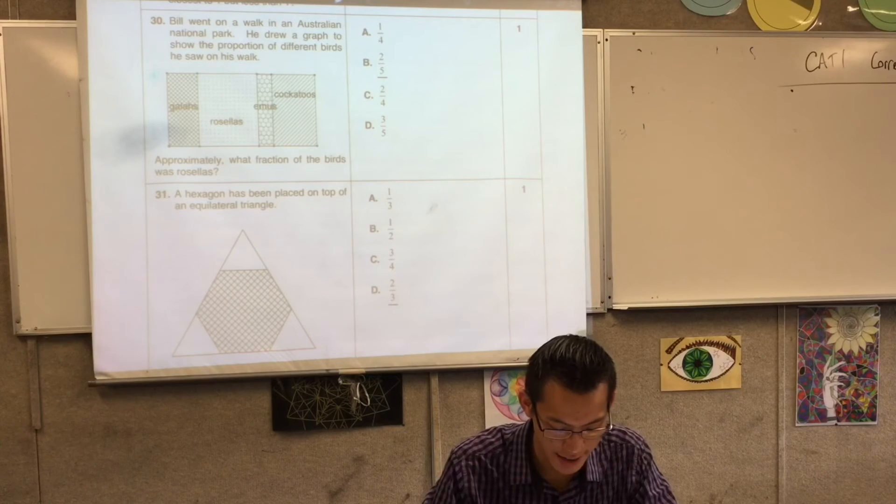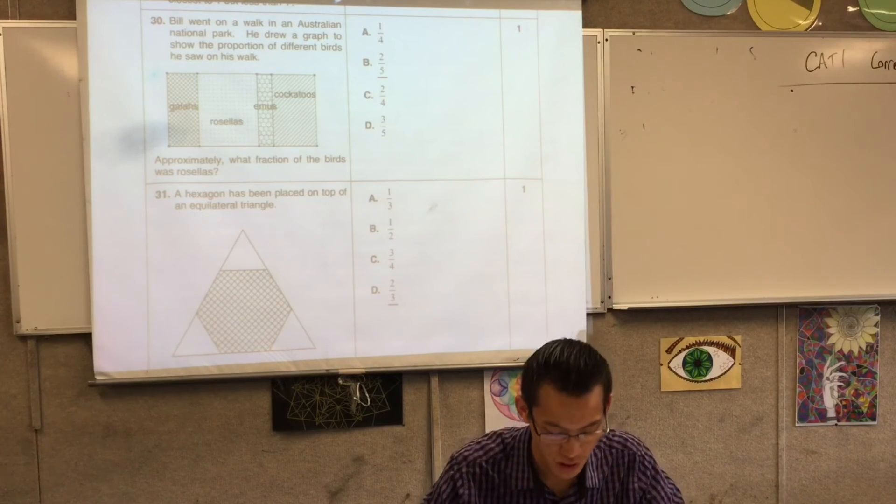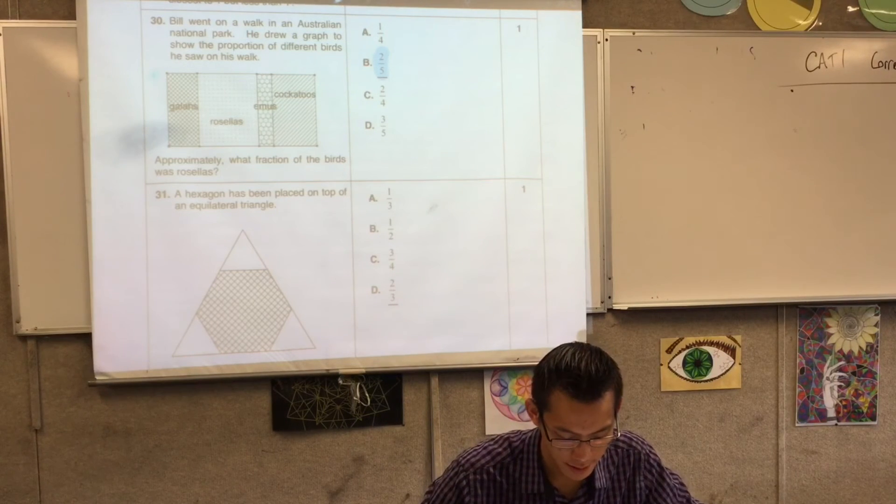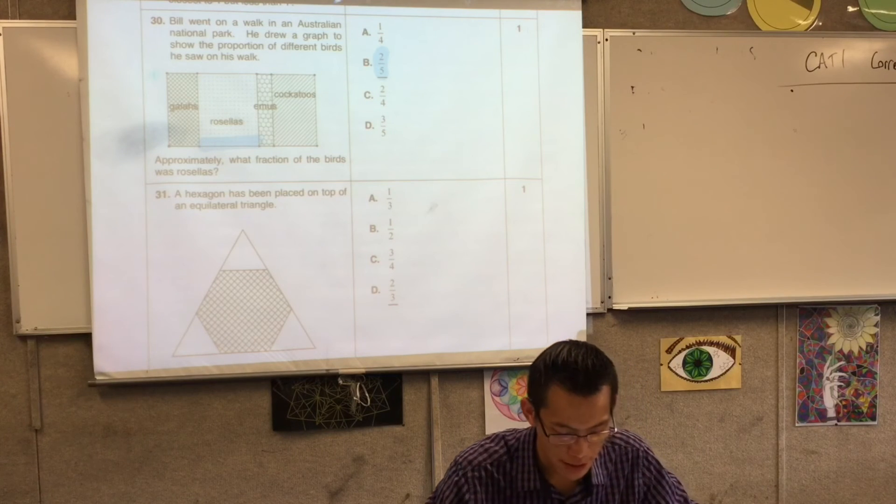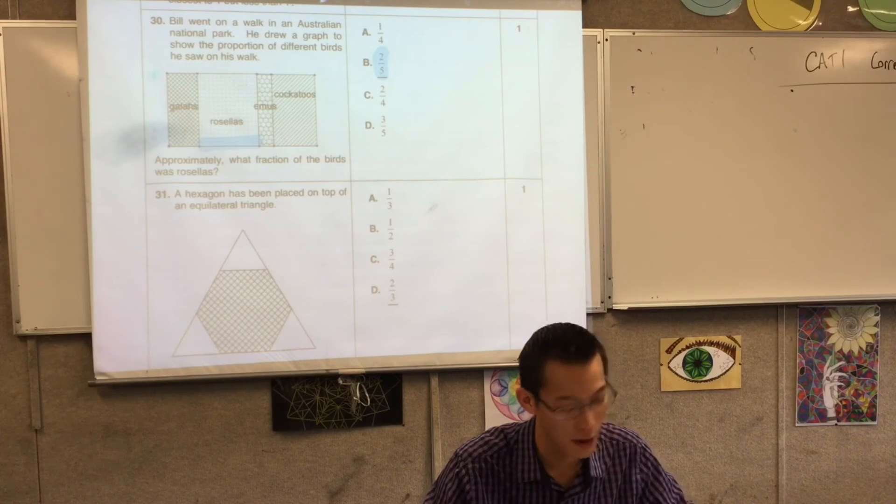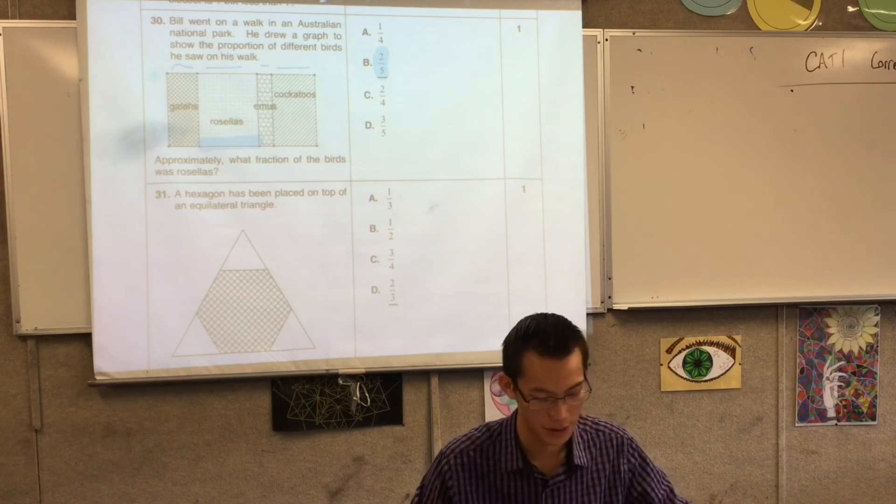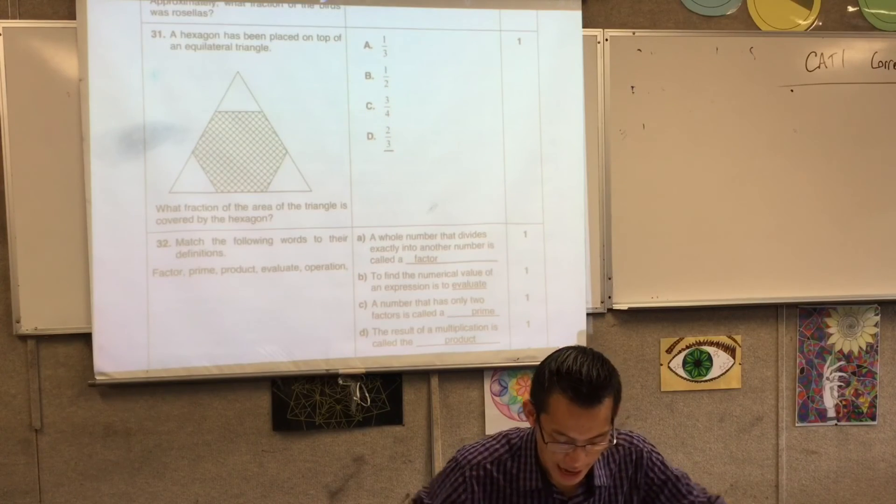Bill went on a walk in an Australian National Park. He drew this graph, and this is about fractions again, showing the proportions. On the last page, I think it is, two-fifths is the fraction of the birds that were rosellas. Because you can see, if you had a ruler with you, you could measure each of these sections out and you could find out how much of it was there as a proportion of the whole thing.